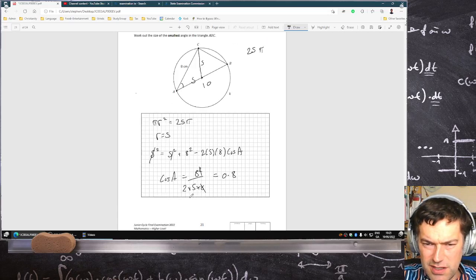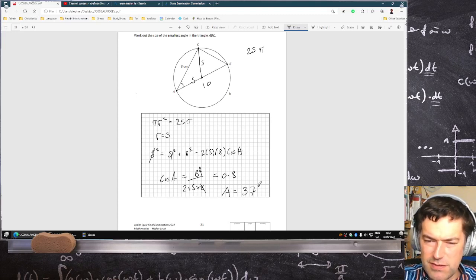Doesn't say anything about rounding off. I got A is, to the nearest degree anyway, it's 37 degrees.